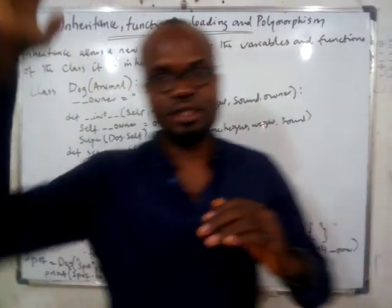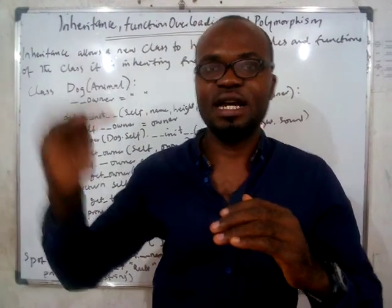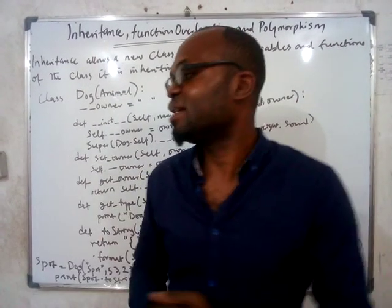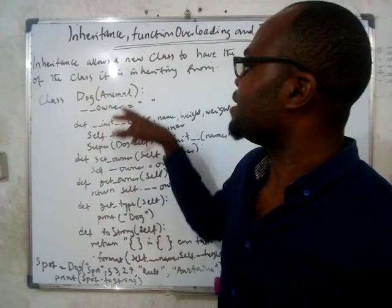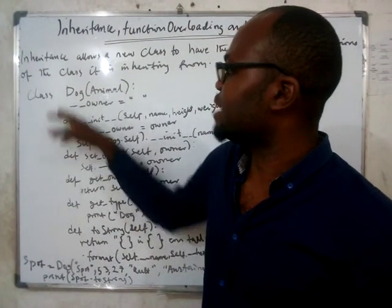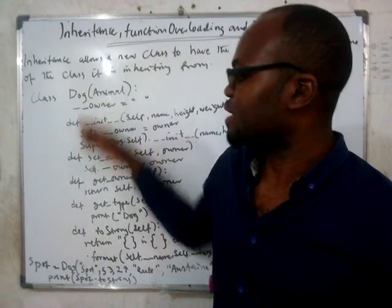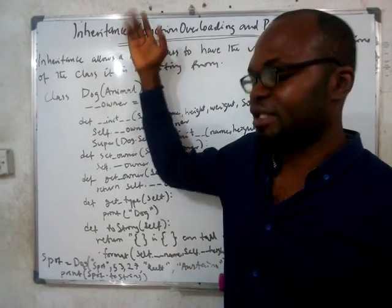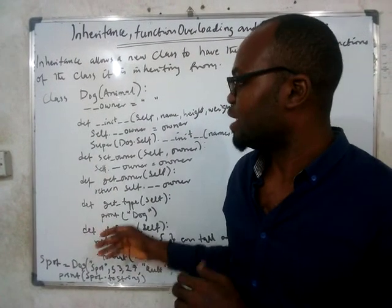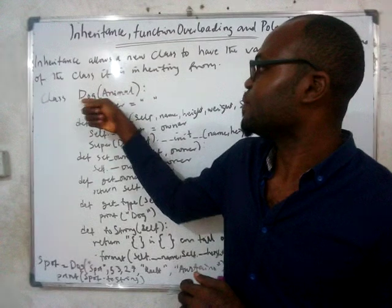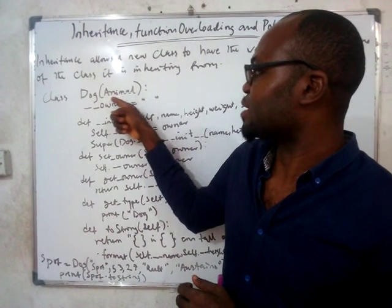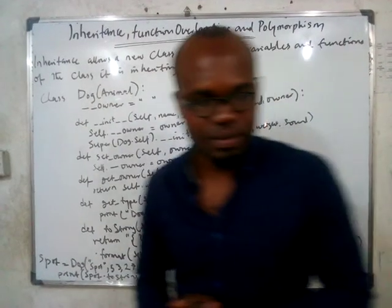You inherit everything that your father or your grandfather has, but at the same time you have new things that they don't have. So you don't have to start writing everything that you've already written in Animal. You just write only the things that the Dog has that Animal doesn't have, because Dog is already inheriting every other thing that Animal has. So it makes the code for Dog shorter, while still having the same capability, as if all the characteristics of Animal are also written inside Dog.